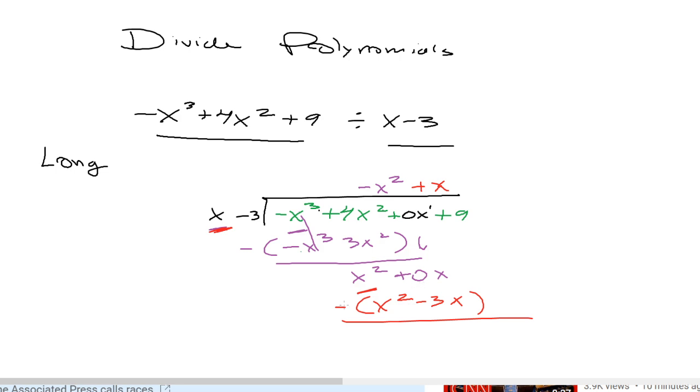Subtract those two, 0 minus negative 3, we get 3x. This goes away. The last thing is to drop this constant of 9.